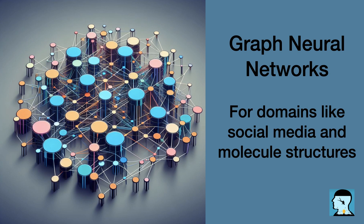That's a fantastic way to illustrate how a scenario can be modeled with a graph, and it really helps to understand the versatility of graph-based problem solving. Moving on, it would be great to delve into the differences between regular neural networks and graph neural networks. Could you elaborate on the distinctions between the two and explain the unique advantages that graph neural networks offer?